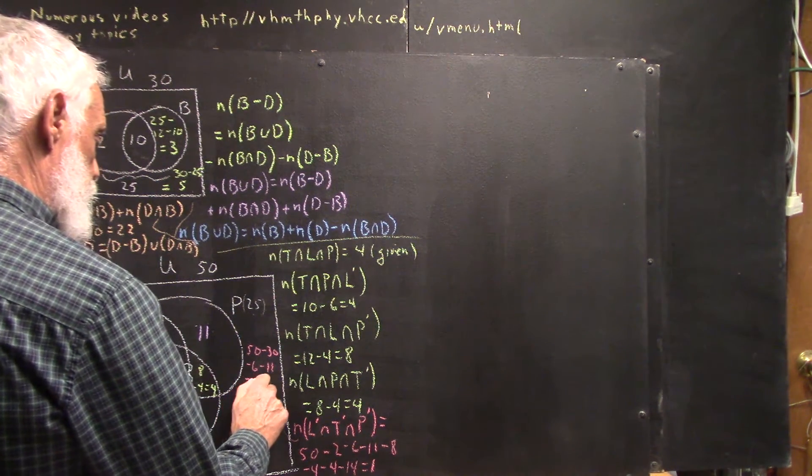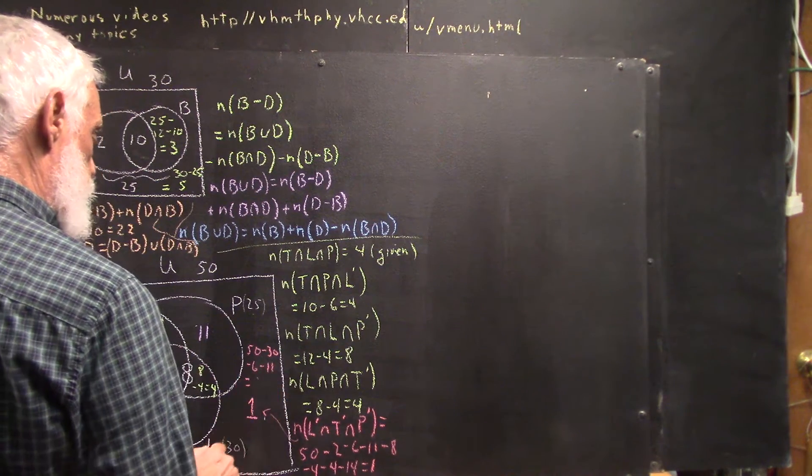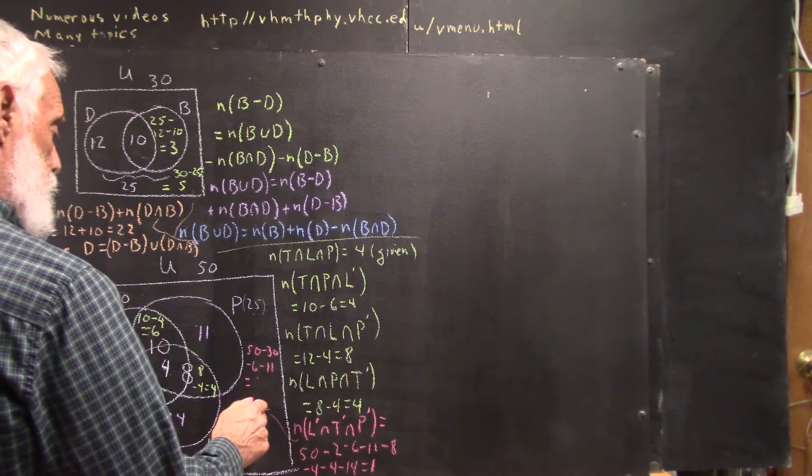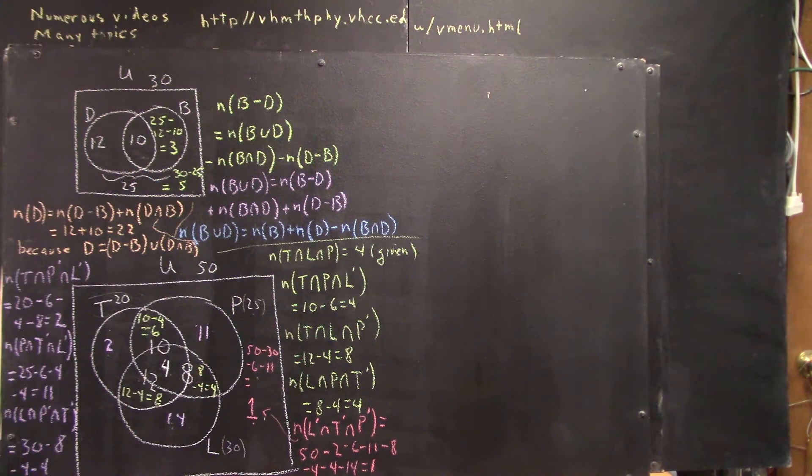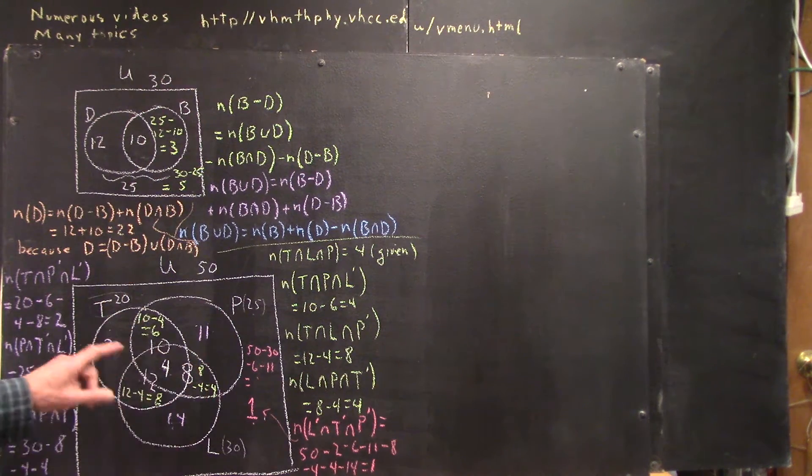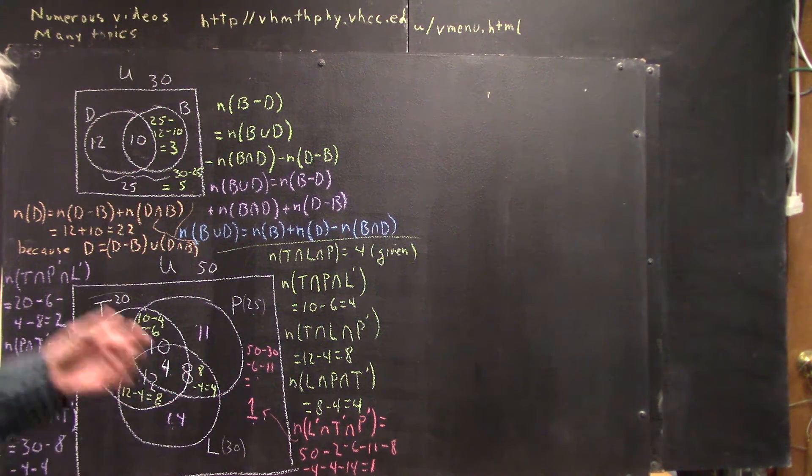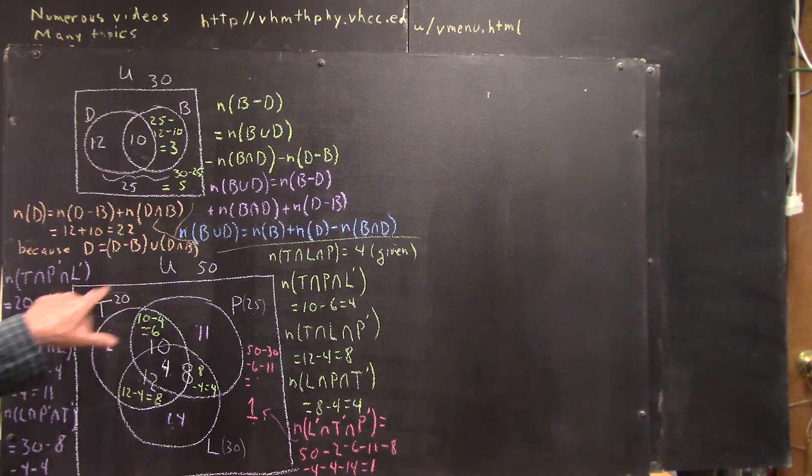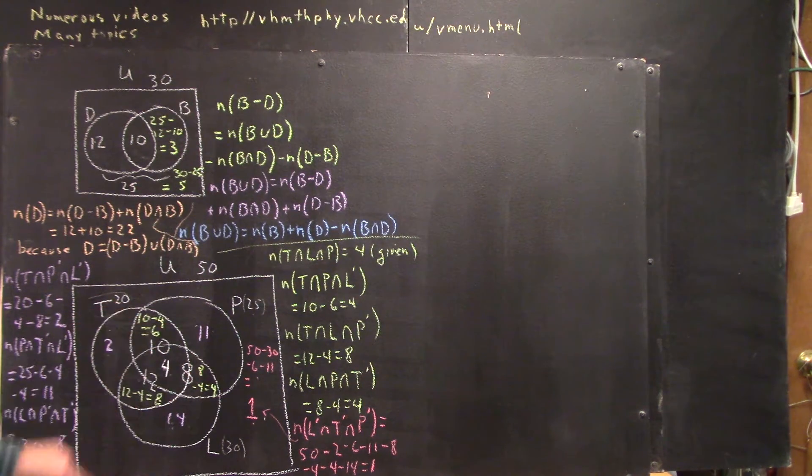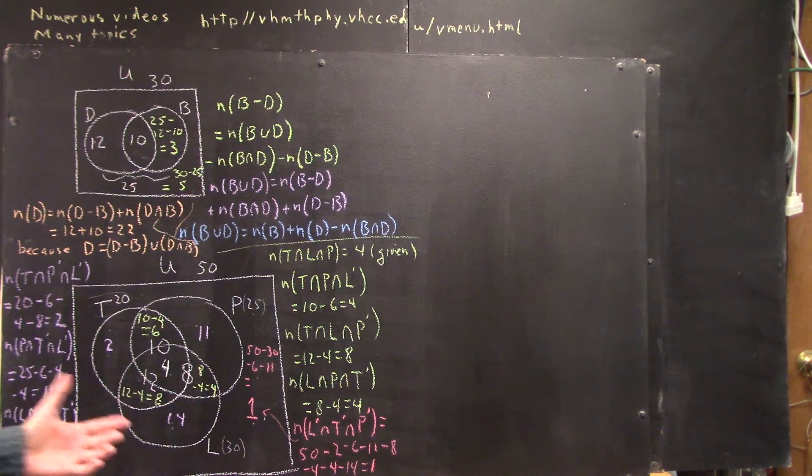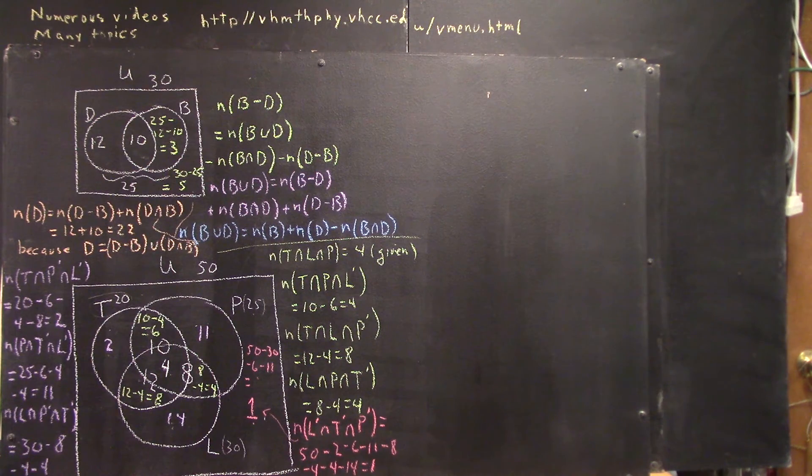And there are other options. Of course, we could have done the 25 and the 2 and the 8 and the 14, subtracted all those numbers, or subtracted the 20 and then the 11, the 4, and the 14. So again, we have options. You want to think about that when you're looking at problems of this nature.